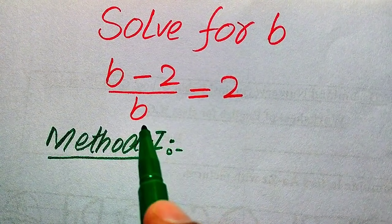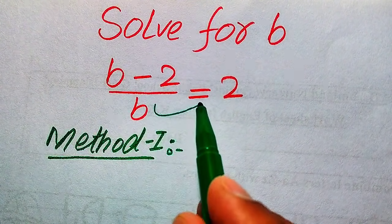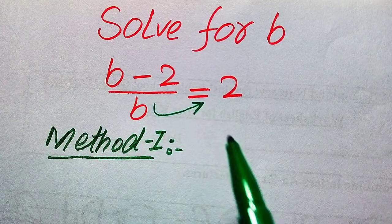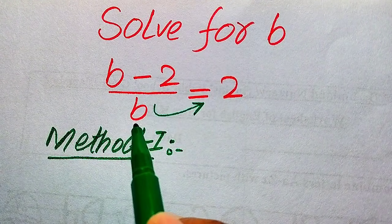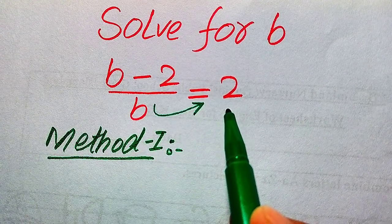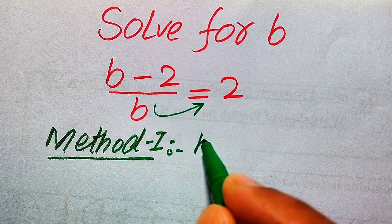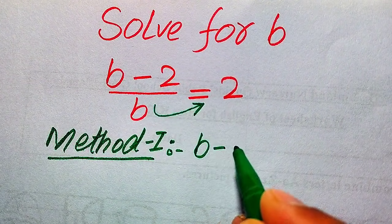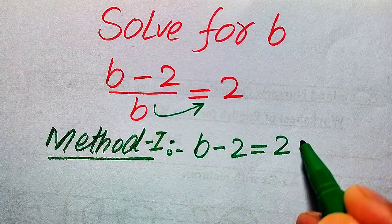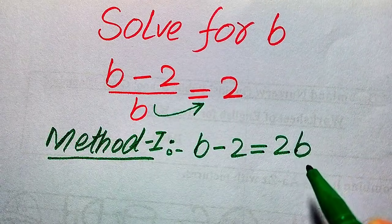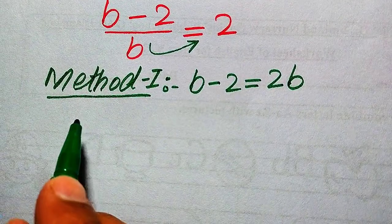In the first method, we need to move this b from the left hand side to the right hand side. You see that it is divided by here; when we move it to the right hand side, it is multiplied by 2. So it will be written as b minus 2 equals 2 times b.